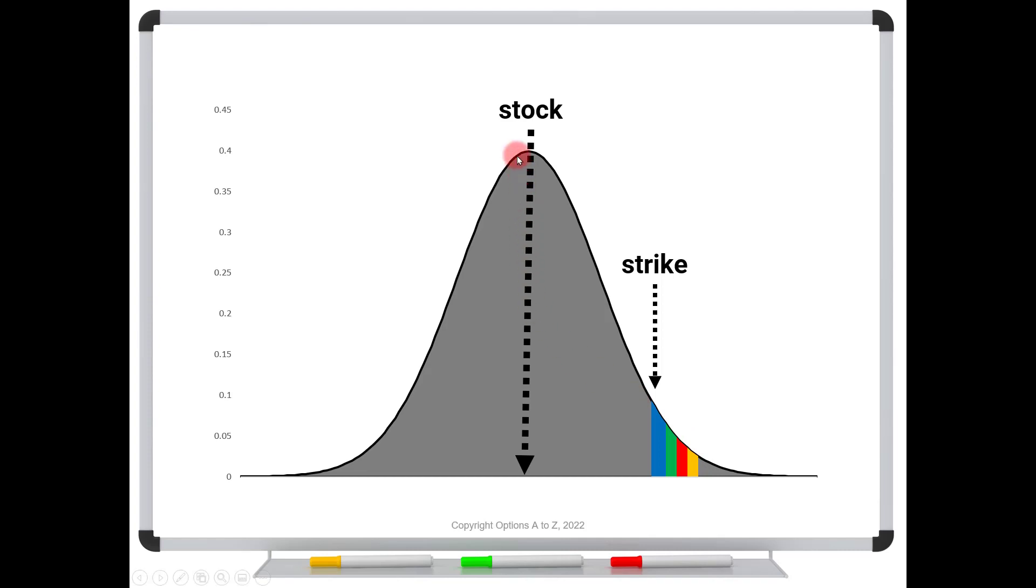But take a look at what happens as this bell curve moves to the right. As that happens, this portion of the bell curve eventually starts becoming in the money. And look what's happening to the height of these bars. We go from, let's say, this yellow to the red. Notice how much bigger the red bar is than the yellow. You've added, relatively speaking, a lot more deltas.